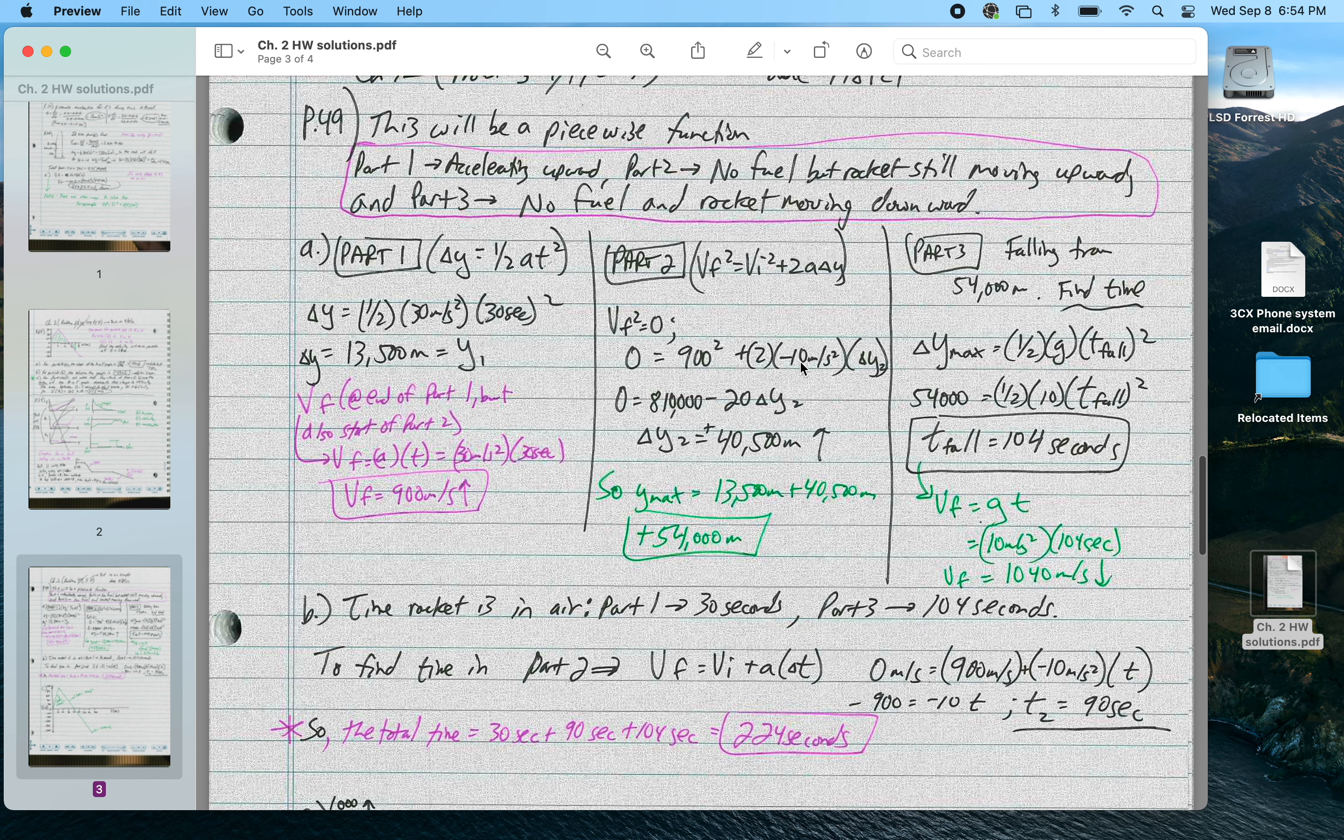For problem 49, again, I went over this in class. This is a piecewise function. So part 1, I'm thinking of the rocket accelerating upward with its engine on. Part 2, I'm thinking about the rocket accelerating downward but still moving upward, it's accelerating downward due to gravity.